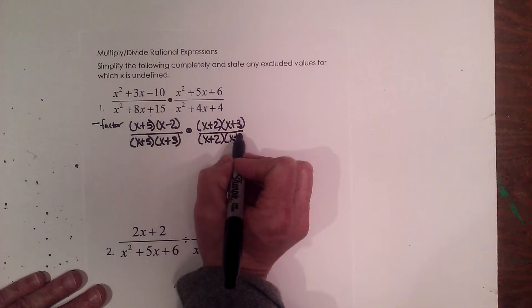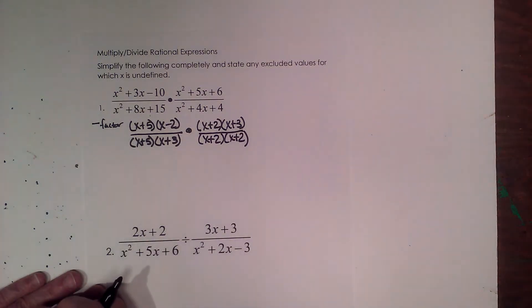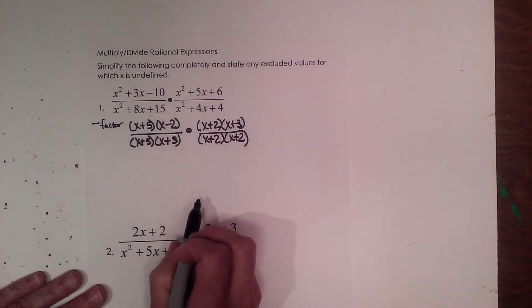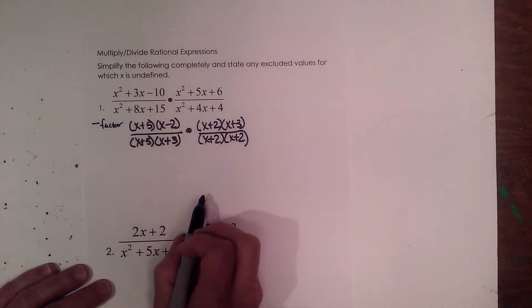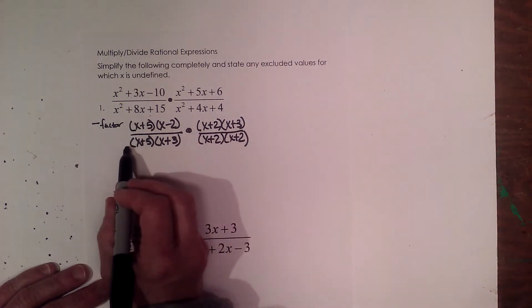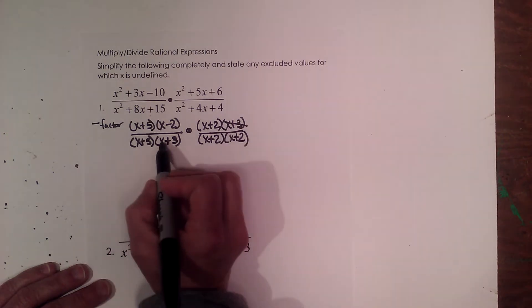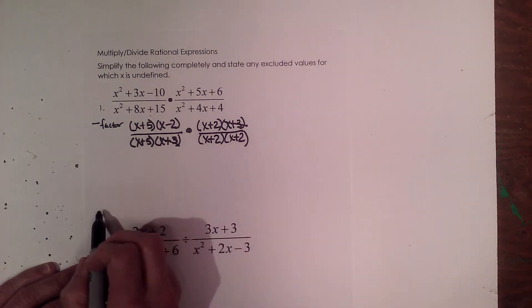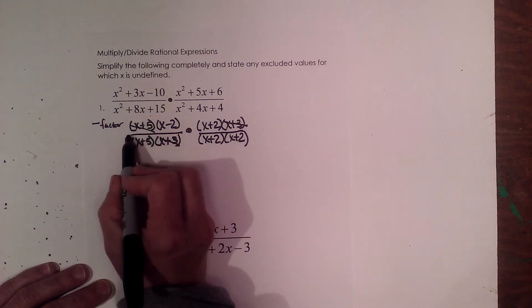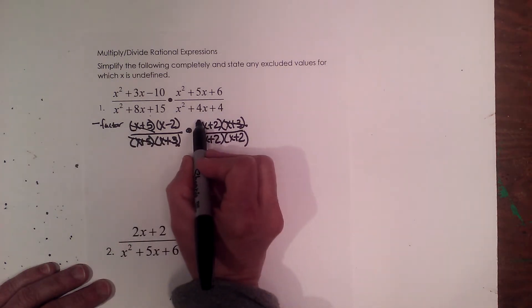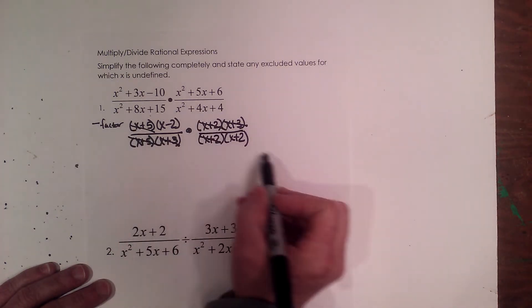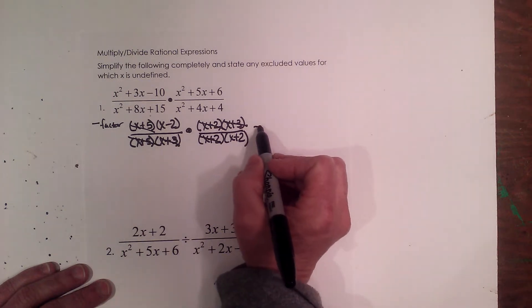So once I get everything factored, then I get to do the easy part. I just start canceling out common factors. Anything in the numerator can cancel with anything in the denominator. So I can cancel this x plus 3 with this x plus 3. I can cancel this x plus 5 with this x plus 5. And I can cancel this x plus 2 with the x plus 2 on the bottom.